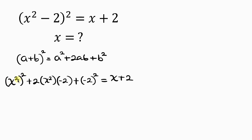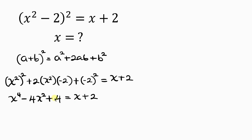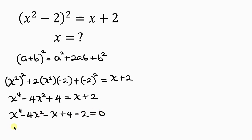Now we simplify. From indices, powers multiply, so 2 times 2 gives 4, giving us x⁴. Then 2 times x² times negative 2 gives negative 4x². And negative 2 squared is 4, so we have x⁴ - 4x² + 4 = x + 2. Moving the right-hand side to the left, we get x⁴ - 4x² - x + 4 - 2 = 0.